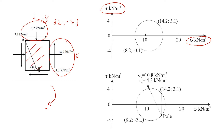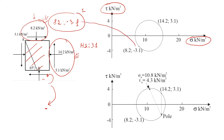For the second point needed to draw Mohr's circle, we have a normal stress of 14.2. The shear stress is acting counterclockwise, which is positive, so it will be 3.1. We now have two points. On the coordinate system, the first point is at (8.2, −3.1) — call it Point 1 — and the second point at (14.2, 3.1) — call it Point 2.